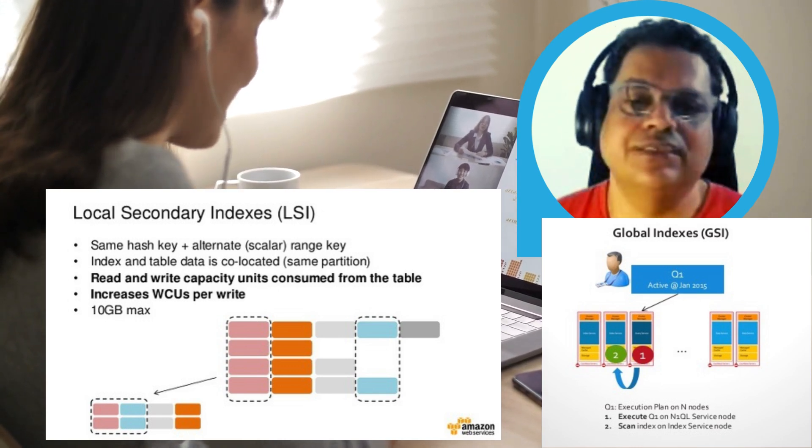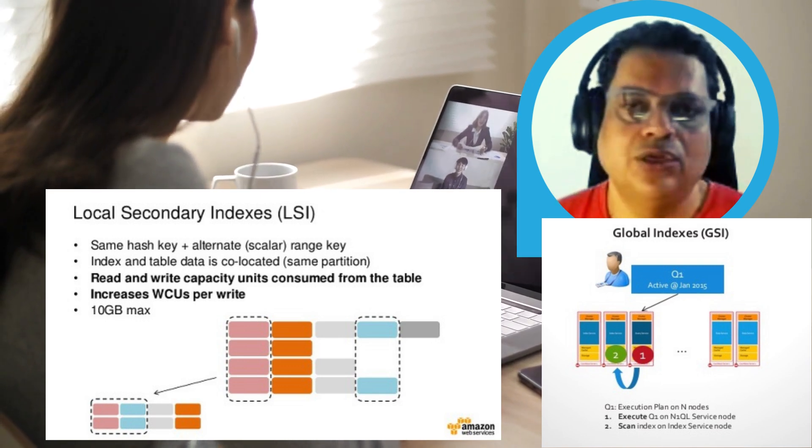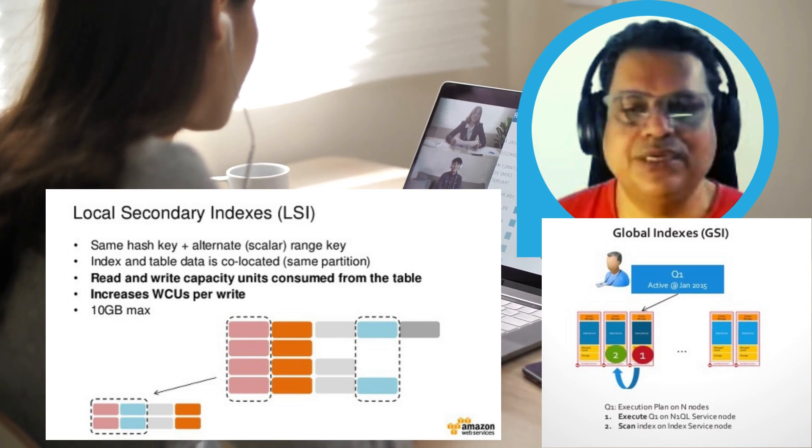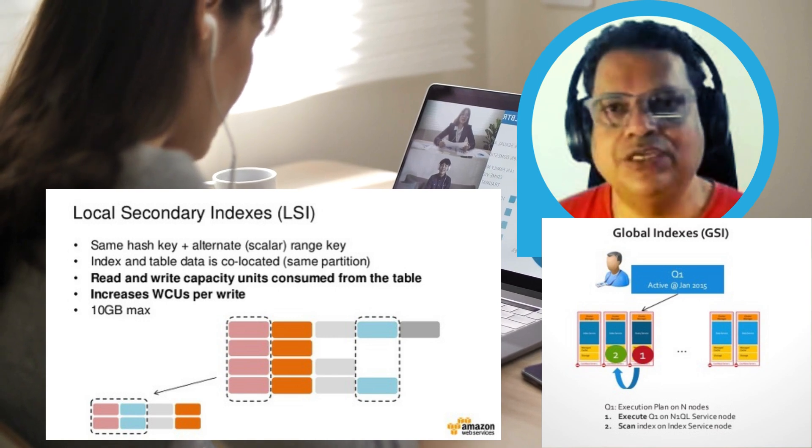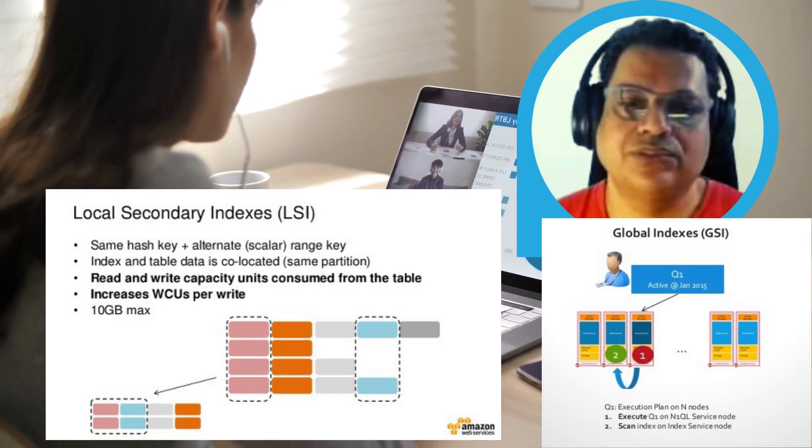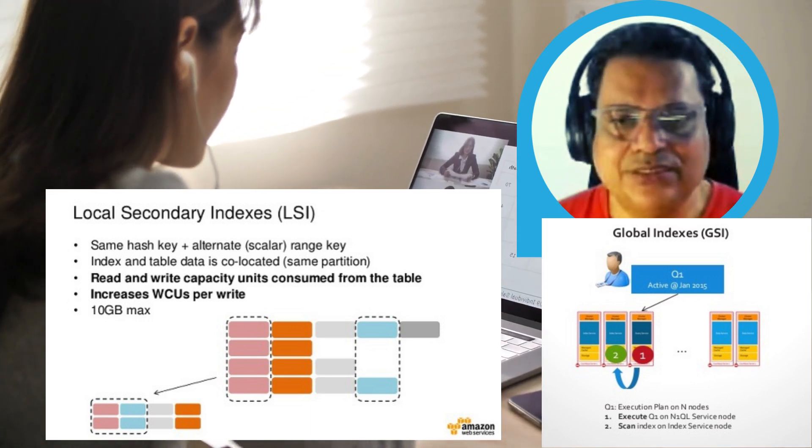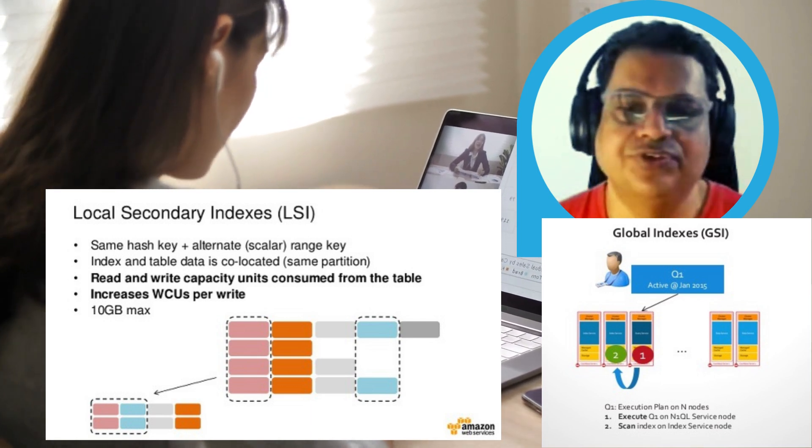For now, you just understand tables, items, attributes. You also understand what is the meaning of primary key, what is partition key, how sort key and partition key together work as a primary key, how you can create composite primary key. Then we also understood what is the meaning of secondary index, how local secondary index and global secondary index work. All these we cleared in this video. I hope you liked it. Let's move to the next concept under DynamoDB in the next video.